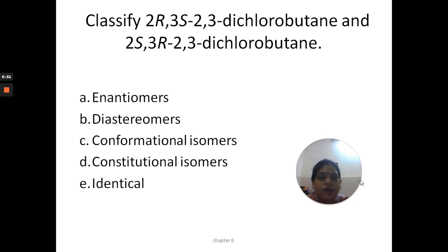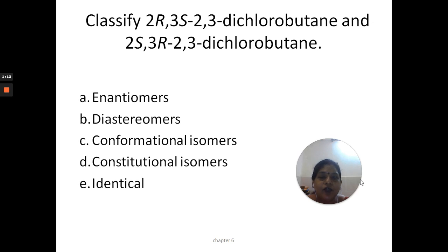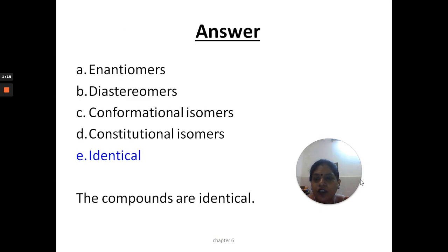The next problem: classify 2R,3S-2,3-dichloropentane and 2S,3R-2,3-dichloropentane as an enantiomer, diastereoisomer, conformational isomer, constitutional isomer, or identical. As you can see, one isomer has 2R,3S and the other has 2S,3R — so they are both similar and identical to each other. The answer to this question is that the compounds are identical to each other.